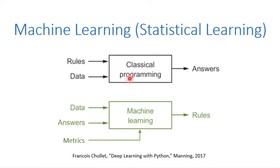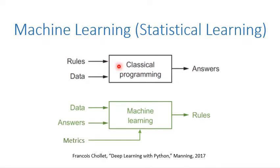So what's the difference between classical programming and machine learning? In classical programming, the programmers develop the rules. And when data comes in, the program will generate the answers according to the rules developed by the programmer. For example, like PowerPoint, when we type text or click our mouse, PowerPoint will show the slides or pictures or text according to the preprogrammed rules.